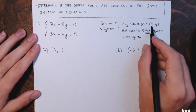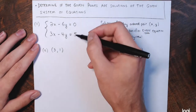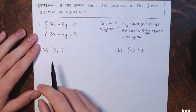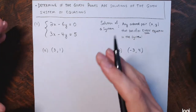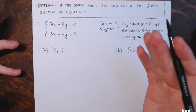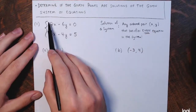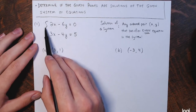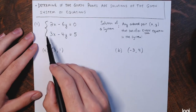I plug in the value for x that's in the ordered pair, and I plug in the value for y, and I see if all the equations are true statements. It's got to be every equation that's made true — not just one. If there are four equations, all four have to be true. The first system has a curly brace indicating both equations are considered together: 2x minus 6y equals 0, and 3x minus 4y equals 5.